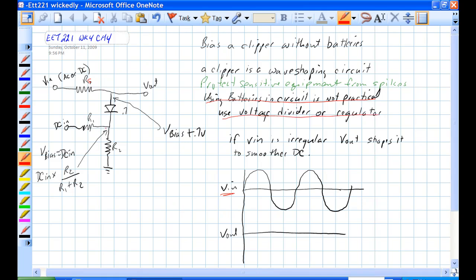So the voltage at this point here is the DC in times R2 over R1 plus R2, typical voltage divider, and plus 0.7 volts. We'll call this bias in plus 0.7 volts. So the voltage at this point is bias in plus 0.7 volts.